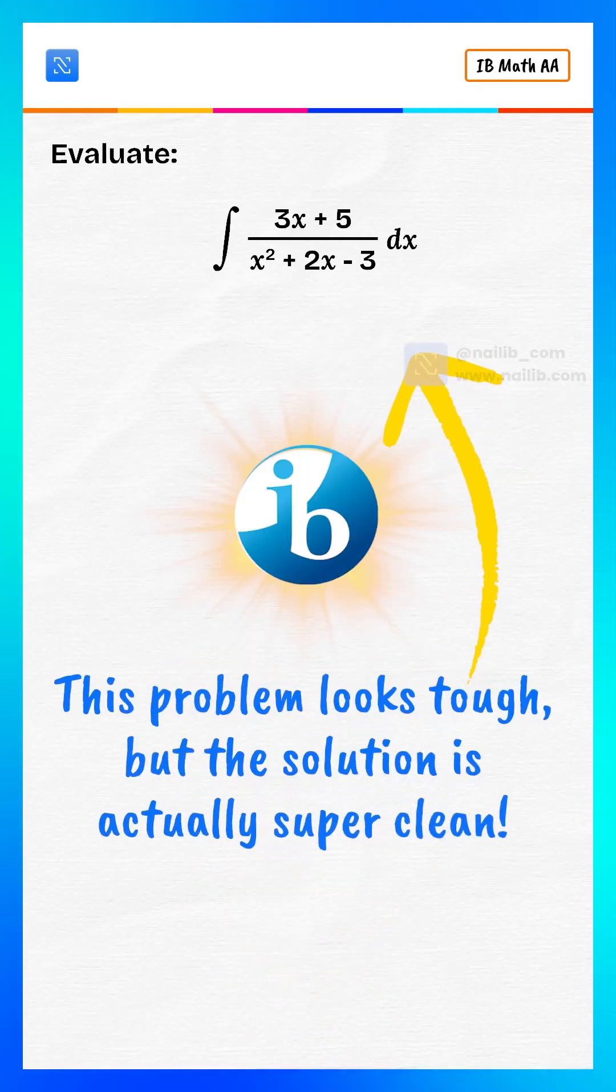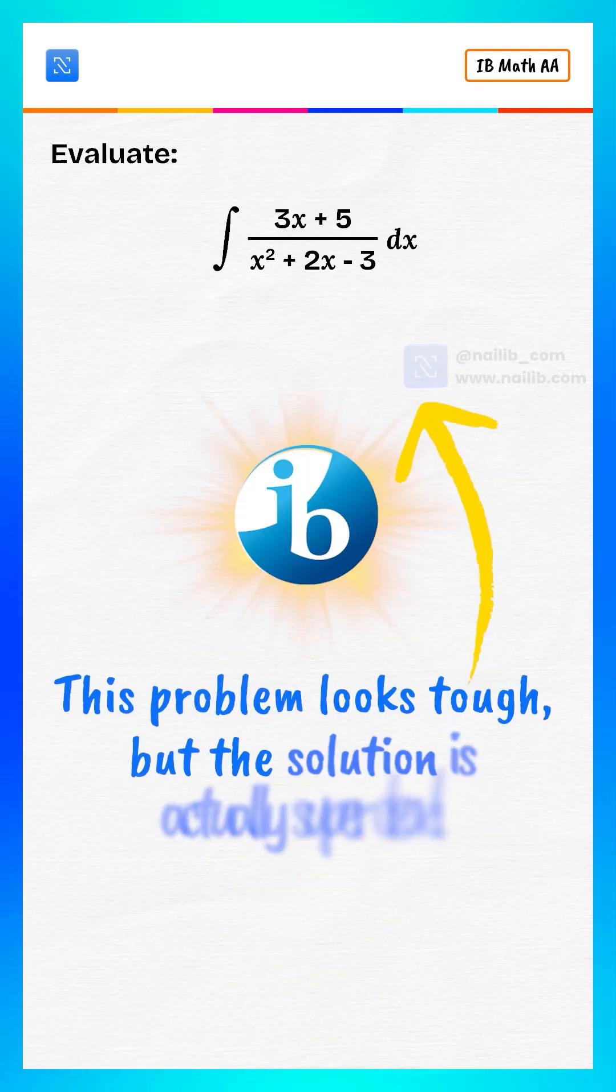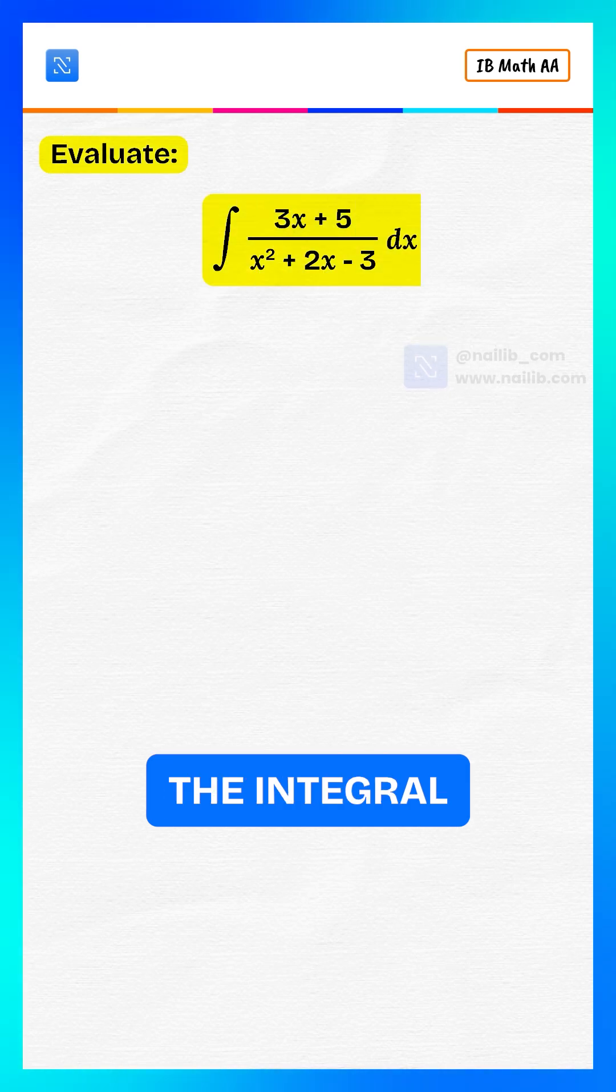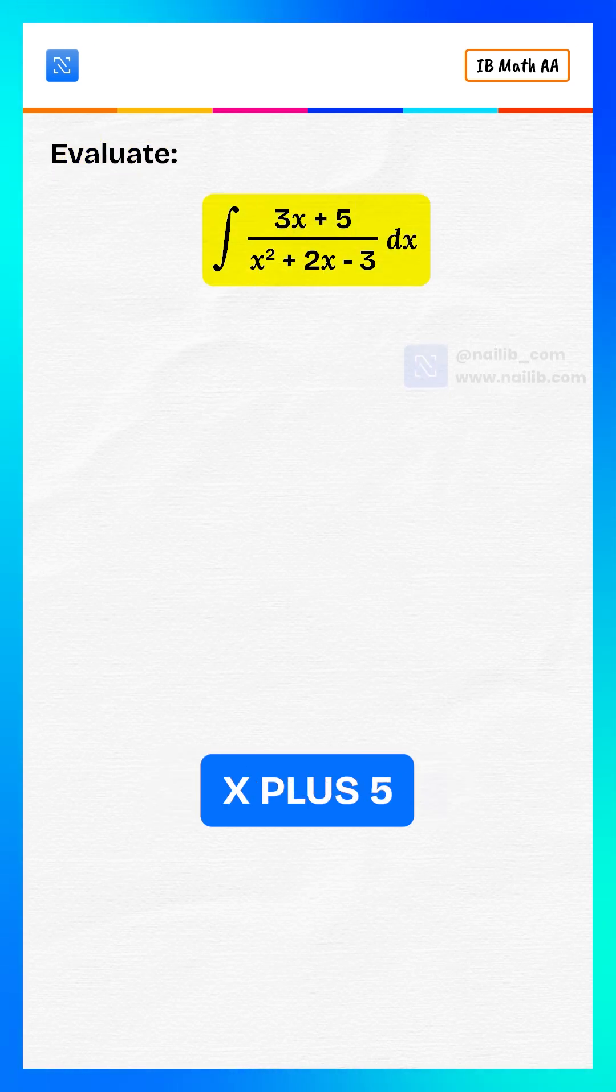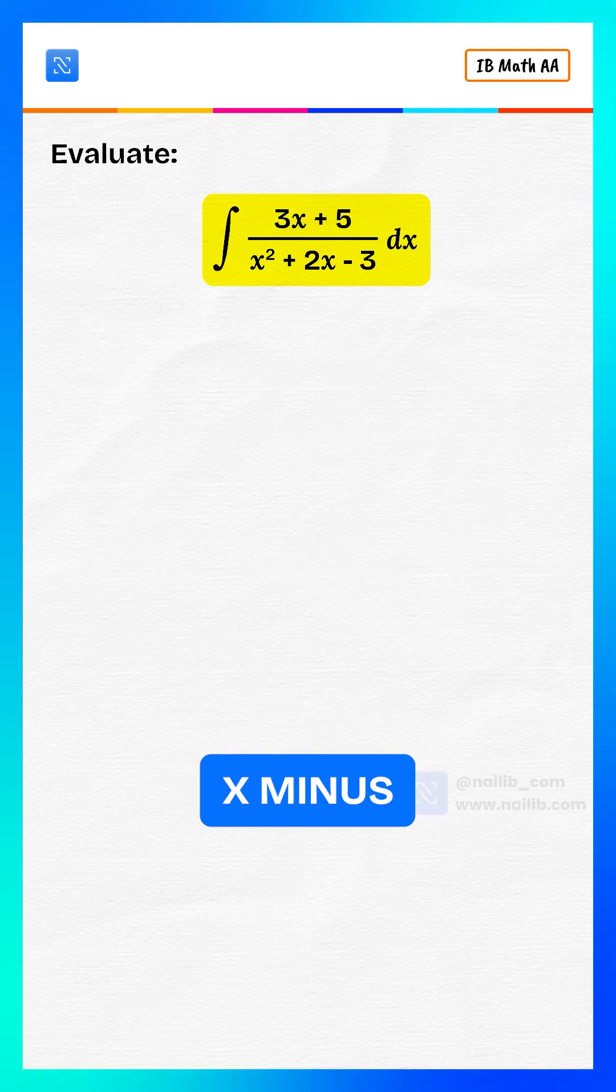This problem looks tough, but the solution is actually super clean. Evaluate the integral of 3x plus 5 divided by x squared plus 2x minus 3 with respect to x.